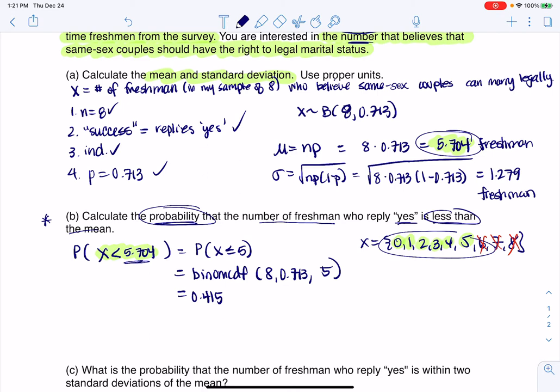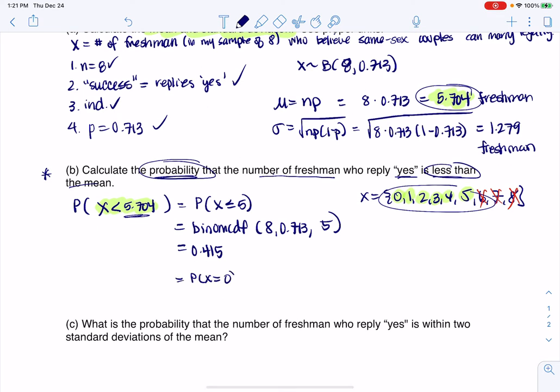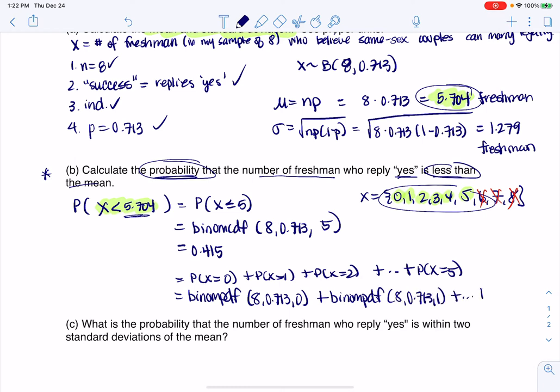Now, if you wanted to do it slightly longer, and I personally wouldn't do this, you could calculate all the PDFs. I could say, hey, this is the probability that X is 0 plus 1 plus 2 all the way up to the probability that X is 5. And you could then go binomial PDF of 8, 0.713, 0 and then add another binomial PDF of 8, 0.713, 1. And keep adding that until you get to 5. But you can see it takes a long time to write and even longer to calculate. And I'm not going to do all that because I have this direct calculator button with binomial CDF. So anytime you have a less than or equal to, you can run the CDF. If you have the equals to, you need the binomial PDF.